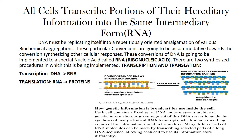I want to get deeper and more specific — how genetic information is broadcasted for use inside of the cell. Each cell contains a fixed set of DNA molecules, its archive of genetic information. A given segment of this DNA serves to guide the synthesis of many identical RNA transcripts, which serve as working copies of the information stored in the archive. Many different sets of RNA molecules can be made by transcribing selected parts of a long DNA sequence, allowing each cell to use the information stored differently. Practically, RNA is just another identical form of information storage — it's going to take one strand of DNA, make it more specific, and store all of the information into separate nucleotides. These are going to be expendable information carriers, and they're also going to be synthesizing other biochemical catalysts inside of the body because they synthesize proteins.